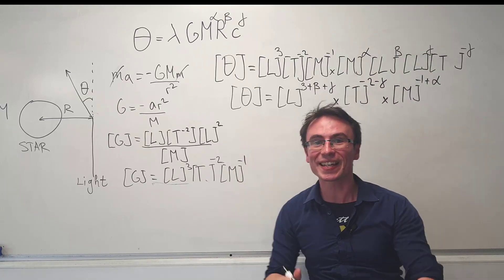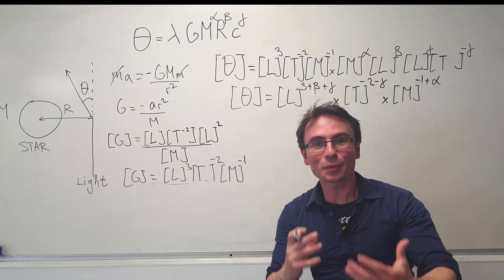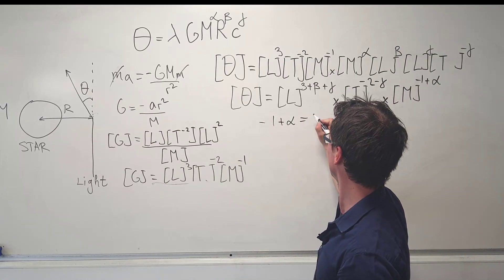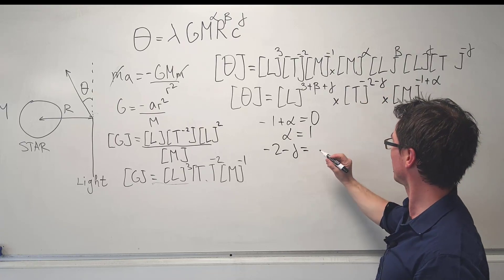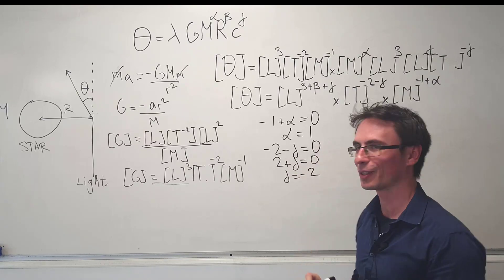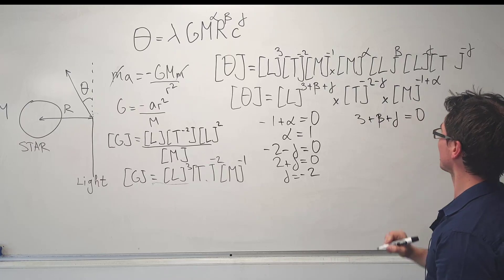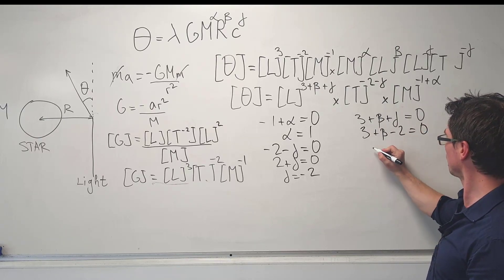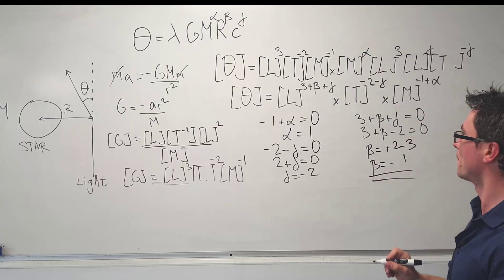Since the left-hand side has no dimensions, all powers must equal zero, giving a system of three equations. For mass: −1 + α = 0, so α = 1. For time: −2 − γ = 0, so γ = −2. For length: 3 + β + γ = 0, which gives 3 + β − 2 = 0, so β = −1.